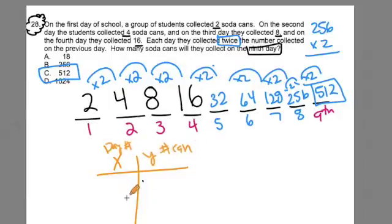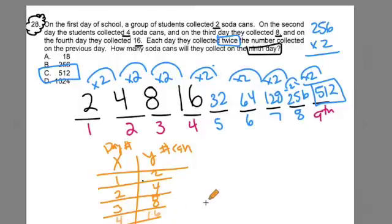X could have been represented as the day number and Y as the number of cans. If we wanted to record this pattern on the input-output chart, we could have followed the same process. On day 1, it's 2 cans. On day 2, it's 4. On day 3, it's 8. On day 4, it's 16.